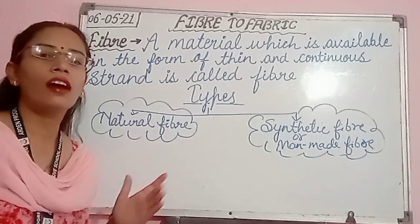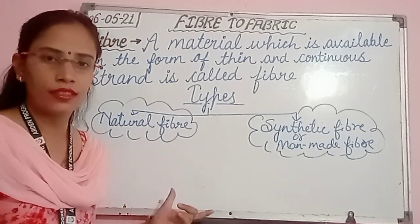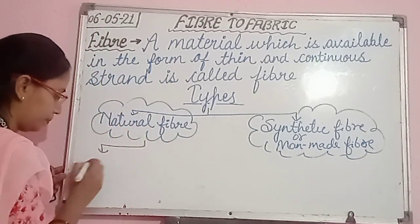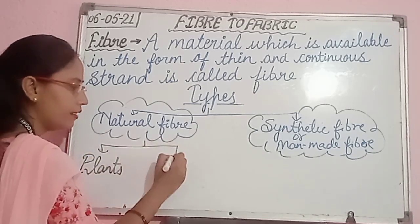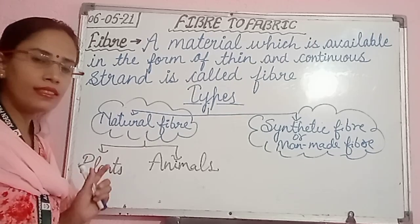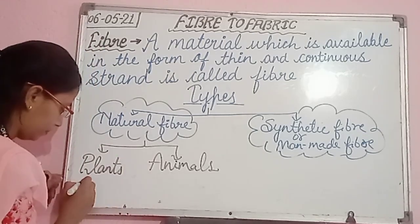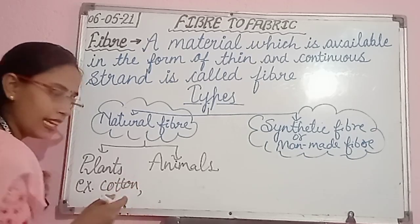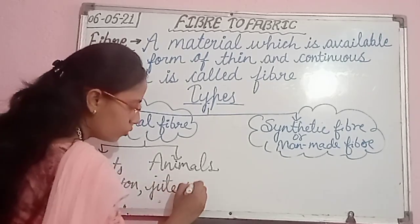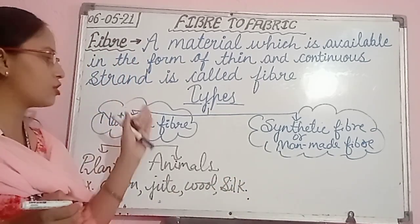Natural fibers are those fibers which we get from nature - they are naturally occurring. The sources of natural fibers are plants and animals. Those fibers which we get from plants and animals come under the category of natural fibers. For example, cotton - we get cotton from the cotton plant. Jute, wool, and silk are also some examples of natural fibers.